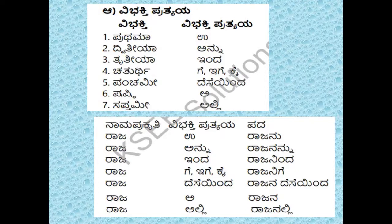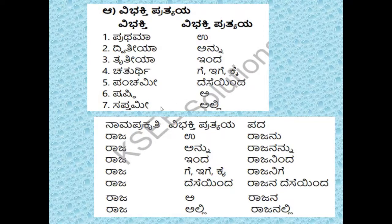There are actually eight, but in your textbook only seven are there. You need to remember: Pratama - u, Dvitiya - annu, Tritiya - inda, Chaturthi - ge/ige/ke, Panchami - desai/inda, Shashthi - a, Saptami - alli. These are the seven suffixes you need to remember.